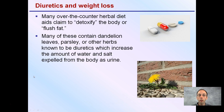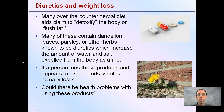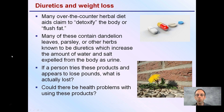Diuretics and weight loss: many over-the-counter herbal diets claim to detoxify the body or flush fat out of the body. Many of these contain dandelion leaves, parsley, or other herbs known to be diuretics, which increase the amount of water and salt expelled from the body as urine. So if a person tries one of these products and appears to lose pounds, what are they actually losing? Are they actually losing fat?